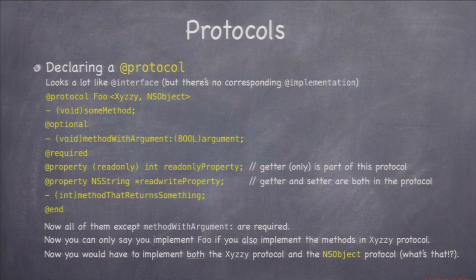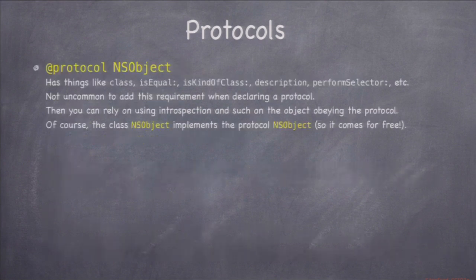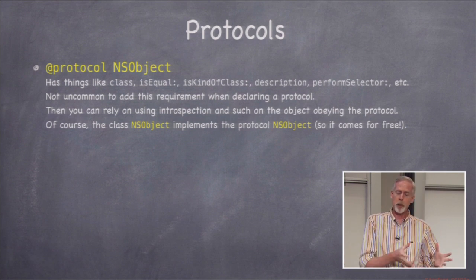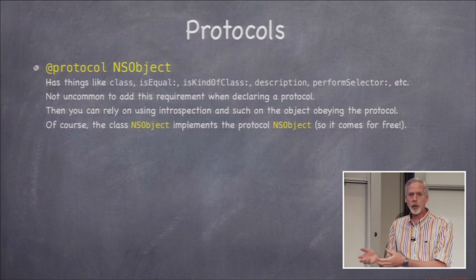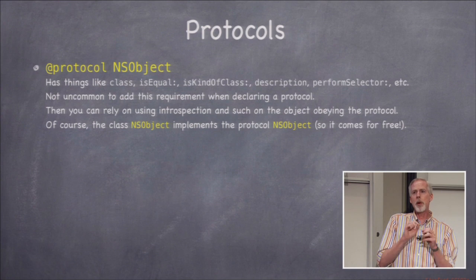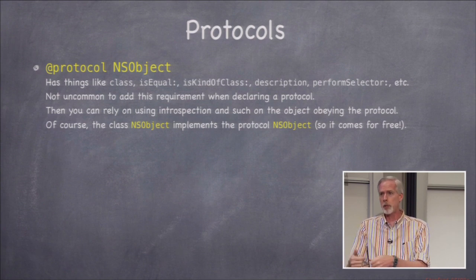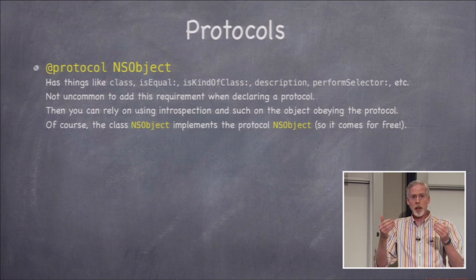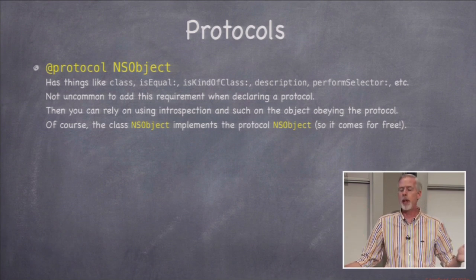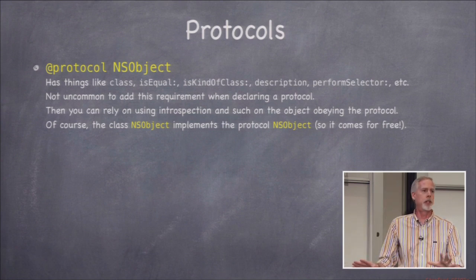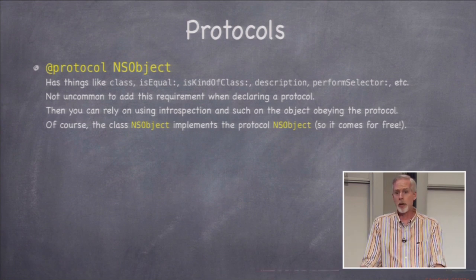The NSObject protocol is very common. NSObject protocol includes almost all the methods in the NSObject class — isEqual, isKindOfClass, description, performSelector, all those NSObject things. The reason we have both an NSObject protocol and class with nearly the same methods is that sometimes we want to declare a protocol where we also want to require the implementer to essentially be an NSObject. In Objective-C, unlike Java, classes don't automatically inherit from NSObject — it's by convention rather than compiler enforcement. In iOS we always inherit from NSObject.